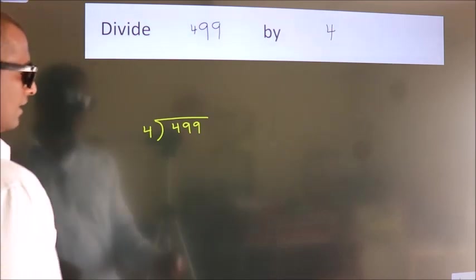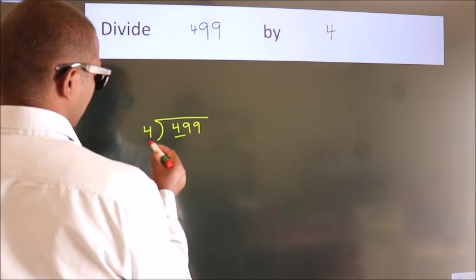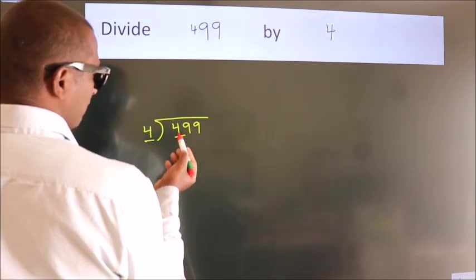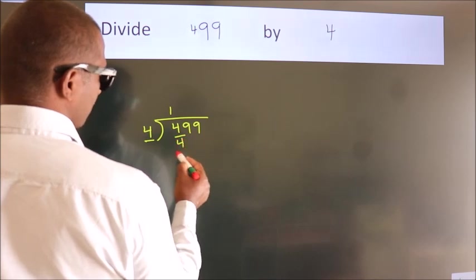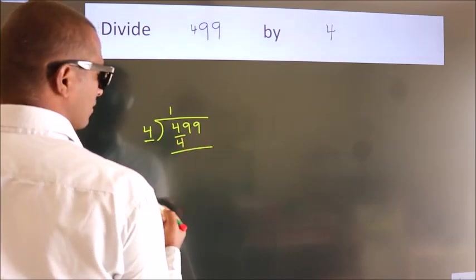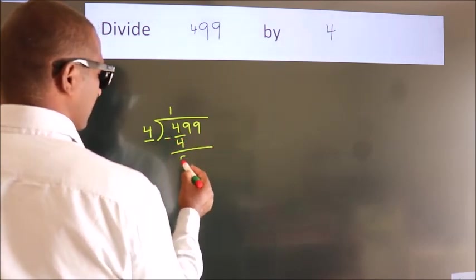Next, here we have 4, here 4. When do we get 4? In 4 table, 4 once is 4. Now we should subtract, we get 0.